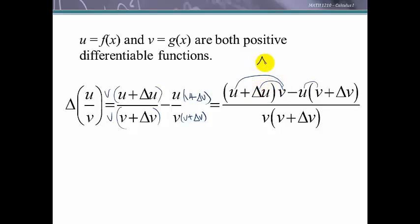Here we would have a delta u times v and here we would have minus u delta v, and that is over the v times v plus delta v. So we could express this like this.